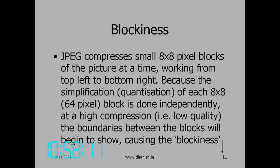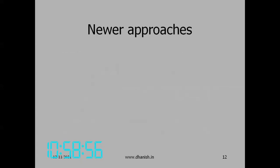JPEG compresses small 8×8 pixel blocks of the picture at a time, scanning from top-left to bottom-right. Because the simplification of each 8×8 pixel block is done independently, at high compression (low quality) the boundaries between the blocks will begin to show, causing blockiness. If you zoom a JPEG image up to the 8-pixel level, you can see that each block of 8 pixels will be almost uniform — a visible artifact of this block-based compression. Newer approaches for improvement have been tried but none have become very popular.